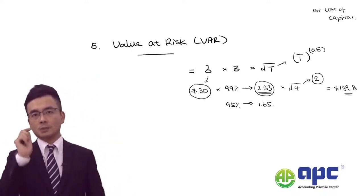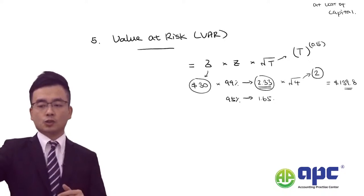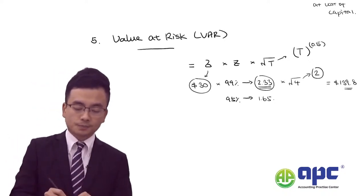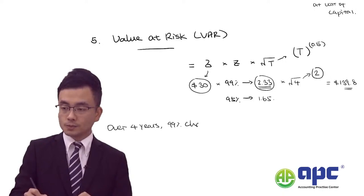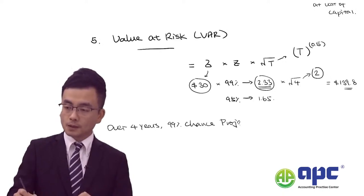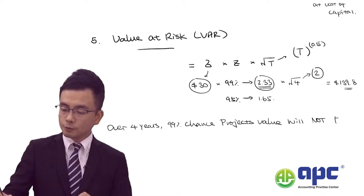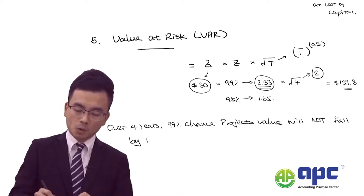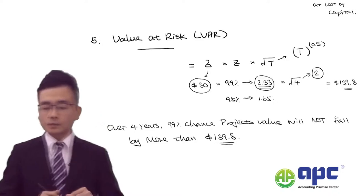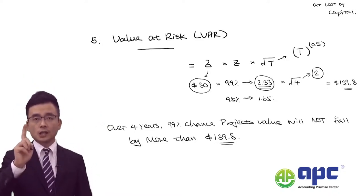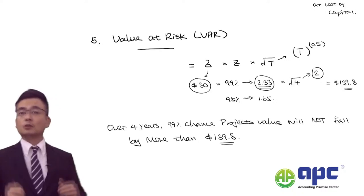We need to tell the examiner what this means. Over 4 years, there is a 99% chance that the project value will not fall by more than $139.8. This means there is a 1% chance that the project value will fall by more than $139.8 — which is the value at risk.